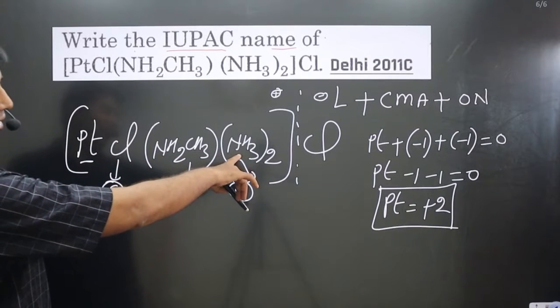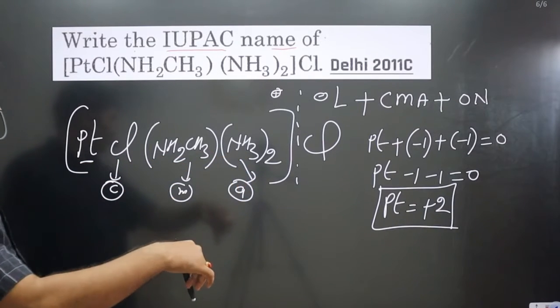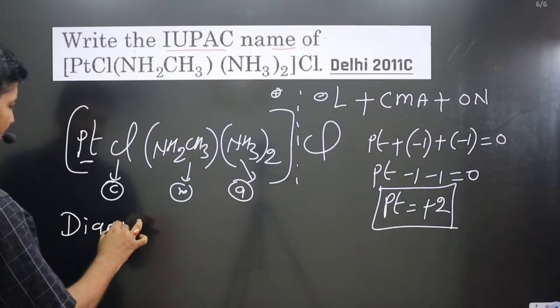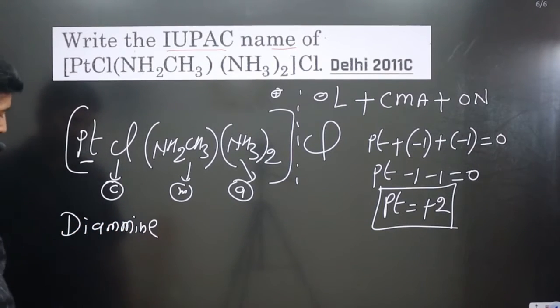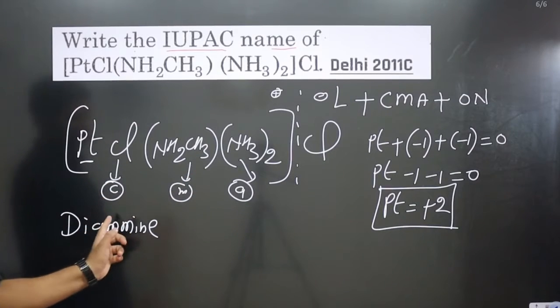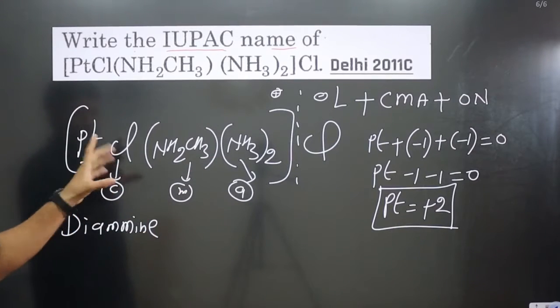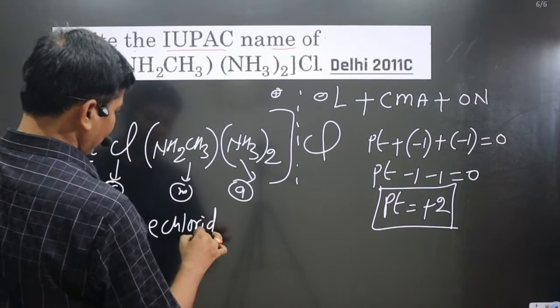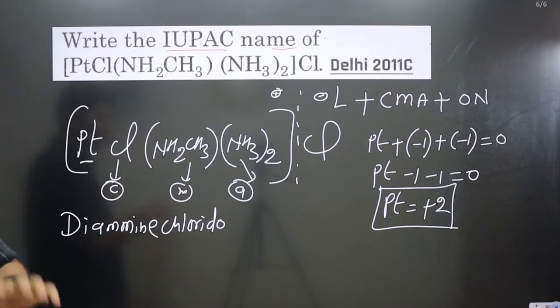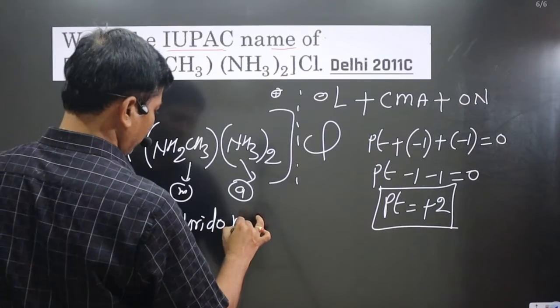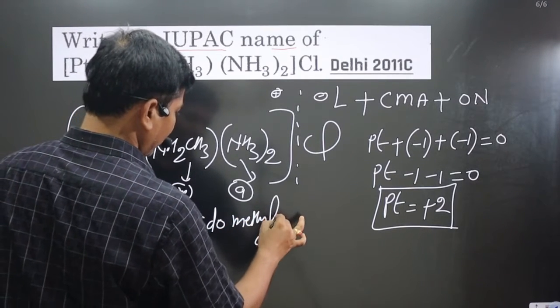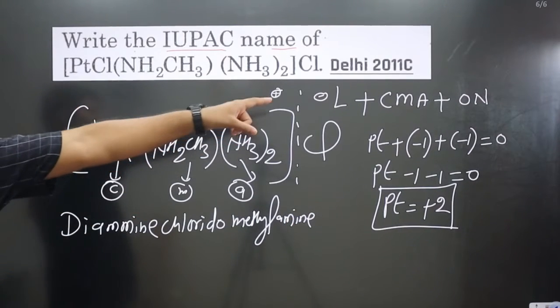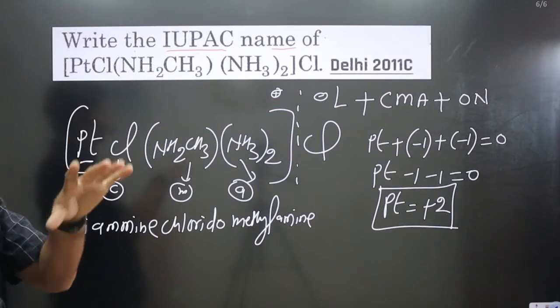How many ammonia molecules are there? Two. The naming is diamine - you have to write double M 'amine' in case of ammonia. We have chlorido for the Cl - only one so just chlorido. Next we have methylamine, only one molecule, so we use the common name methylamine with one M.